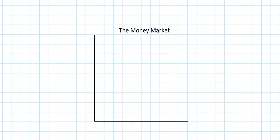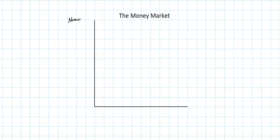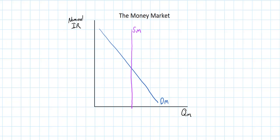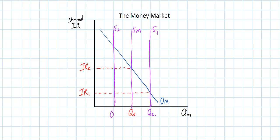Let's move on to the money market. Here, the nominal interest rate is determined, so the vertical axis is labeled nominal interest rate and the horizontal axis is labeled the quantity of money. Demand for money is downward sloping because at lower interest rates, households demand more money for consumption and as an asset. The supply of money is vertical because it is set by the central bank through monetary policy. If there's an increase in the money supply, it represents expansionary monetary policy — such as the purchase of government bonds by the central bank — lowering interest rates. A decrease in money supply represents contractionary monetary policy, such as the sale of government bonds, which increases interest rates and reduces money demanded for consumption and investment.